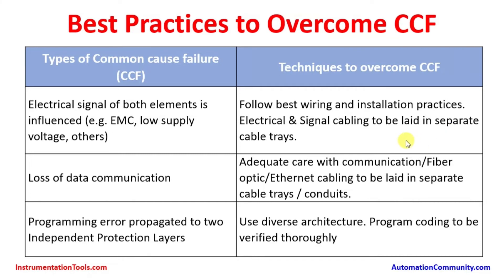Motors or turbines operate at very high voltages like 3.3 kV, 6 kV, or 11 kV, while instrumentation transmitters in the safety instrument system and basic process control system operate at only 24 volts. These two cable types must be laid in separate cable trays with enough distance between them; otherwise, electromagnetic interference can impact the measurement.